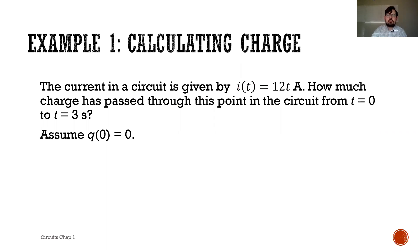We know that current for this circuit looks like i(t) with a climbing current of 12t amperes. How much charge has passed at this point in the circuit from t=0 to t=3 seconds? Assume that the initial charge is 0.